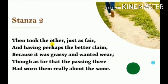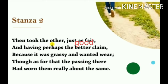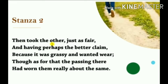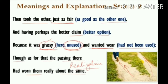Let's move on to stanza 2: 'Then took the other, just as fair, And having perhaps the better claim, Because it was grassy and wanted wear; Though as for that the passing there Had worn them really about the same.' In this stanza the poet says that he selects the road that appears at first glance to be less travelled. This suggests he has an independent spirit and does not wish to follow the crowd.